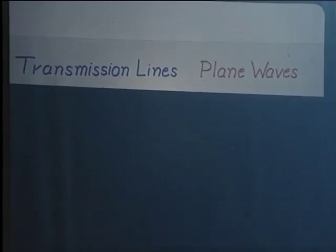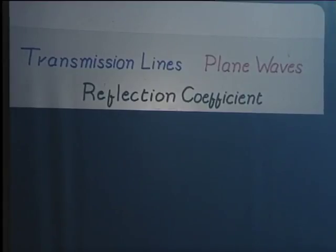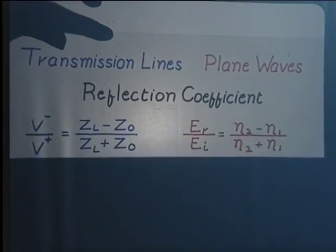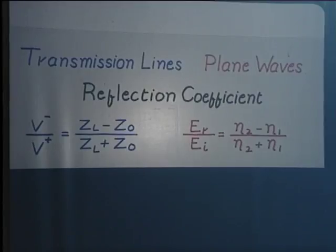The similarity between these two types of waves is quite striking, particularly if we consider the reflection coefficient on a transmission line or the reflection coefficient related to plane waves travelling from one medium to the other. We find that the expressions for the reflection coefficient V⁻/V⁺ for the transmission line and Er/Ei for the plane waves have a striking resemblance. Also, the formation of standing waves etcetera are quite similar in the two cases.